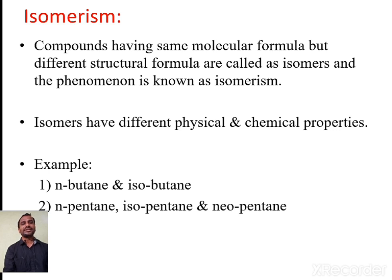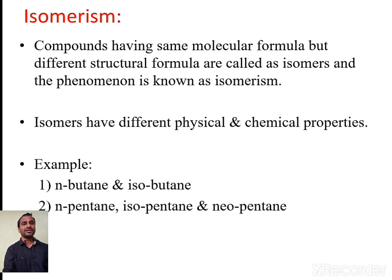For a simple example of isomerism, consider the molecular formula C4H10, which has two possible structural arrangements: one is called n-butane and the second is called isobutane. So n-butane and isobutane are isomers of each other. The second example uses molecular formula C5H12, which has three possible structural arrangements: n-pentane, isopentane, and neopentane. All three are isomers of each other, demonstrating isomerism.